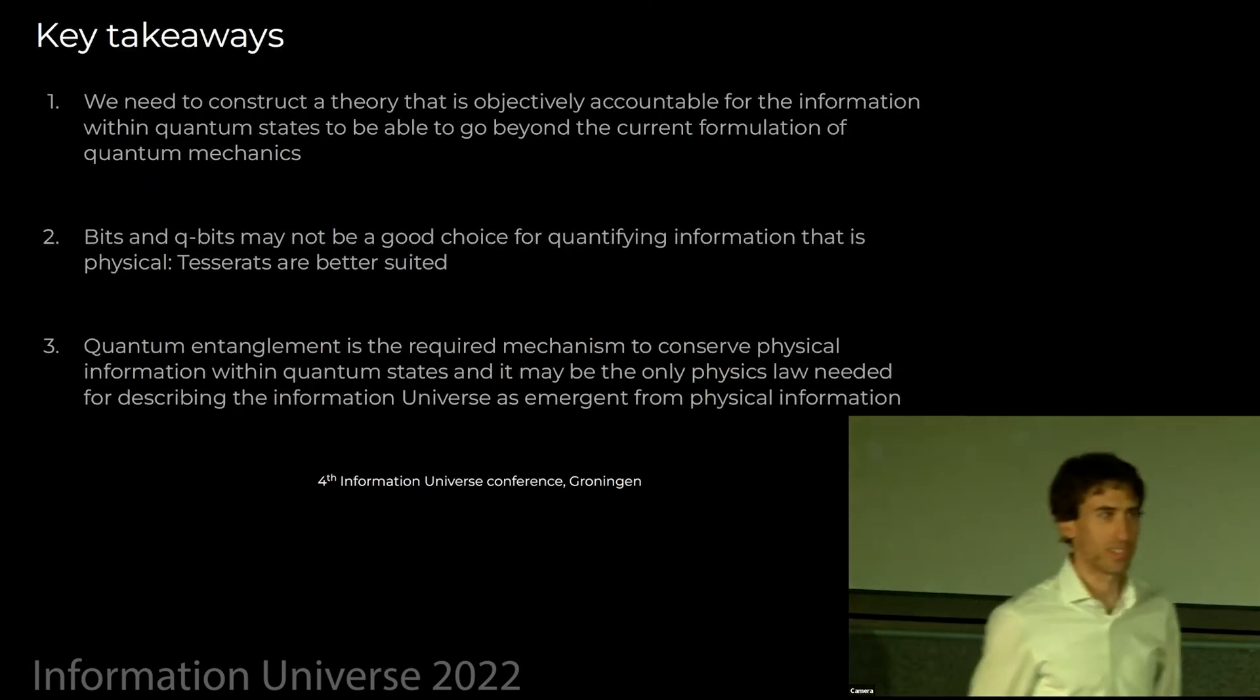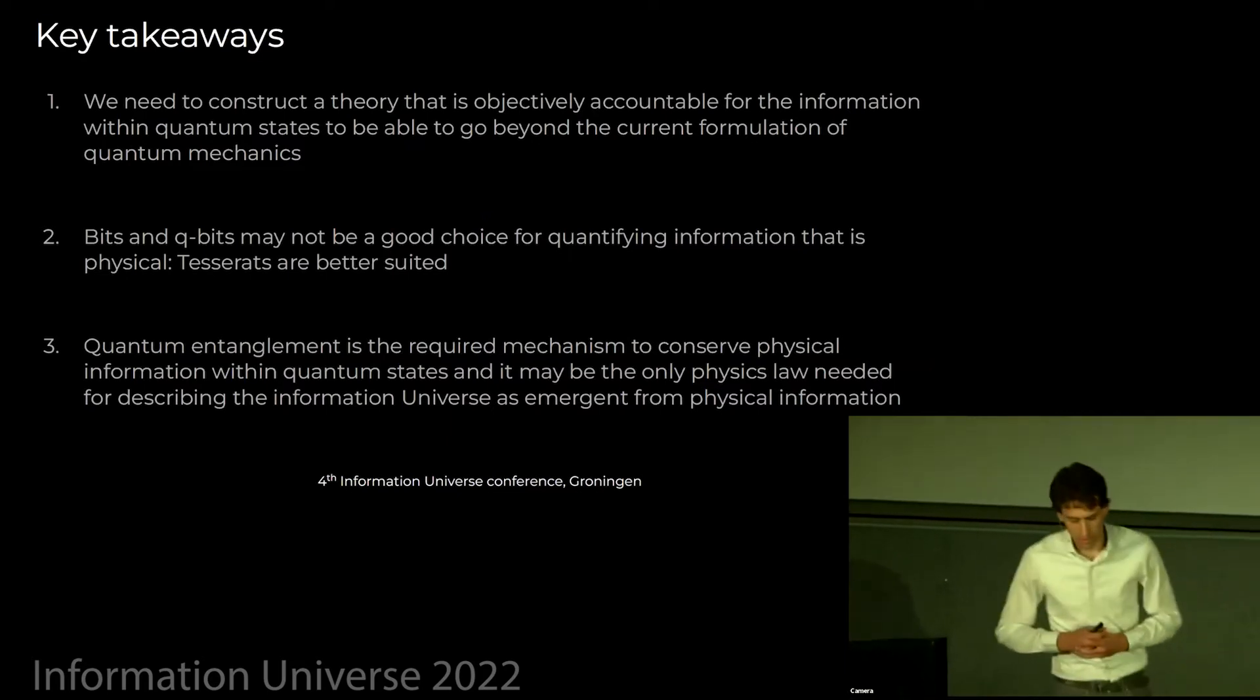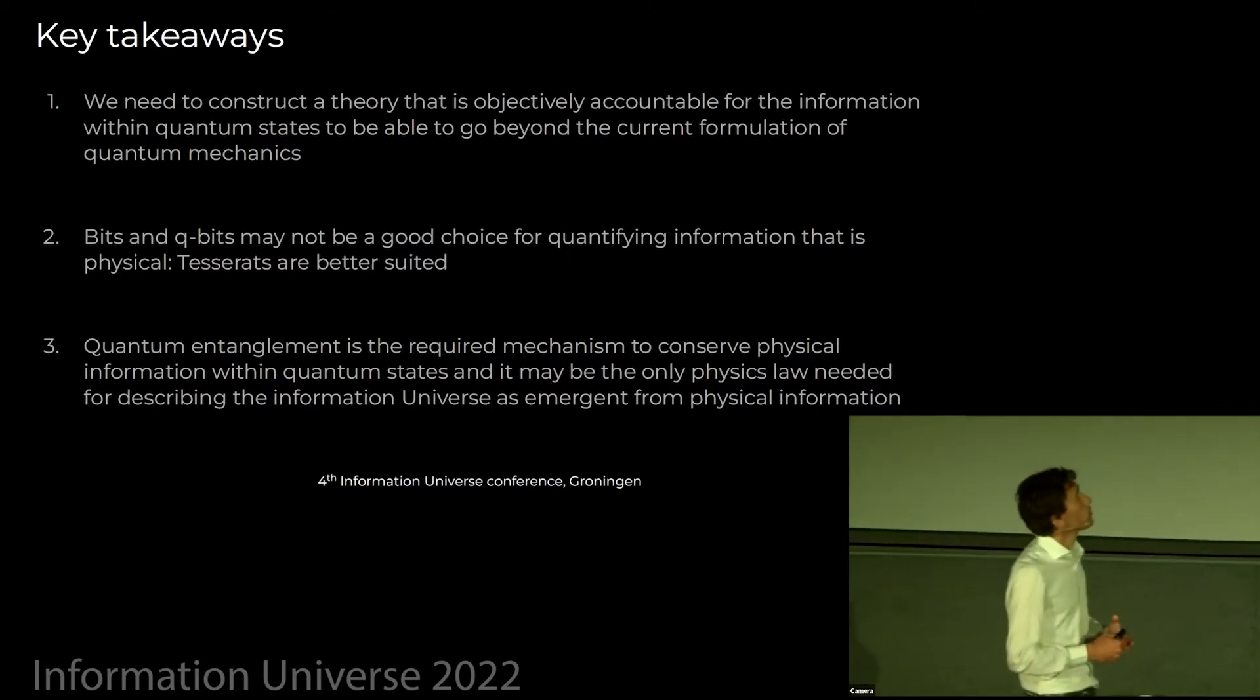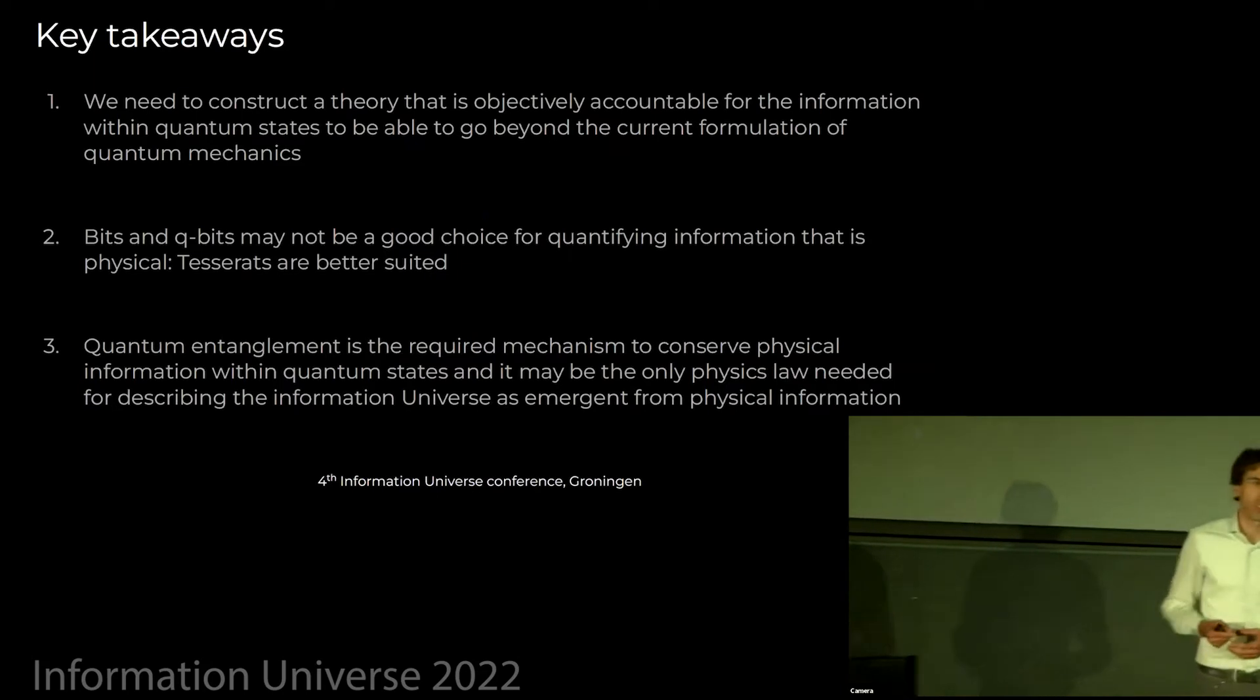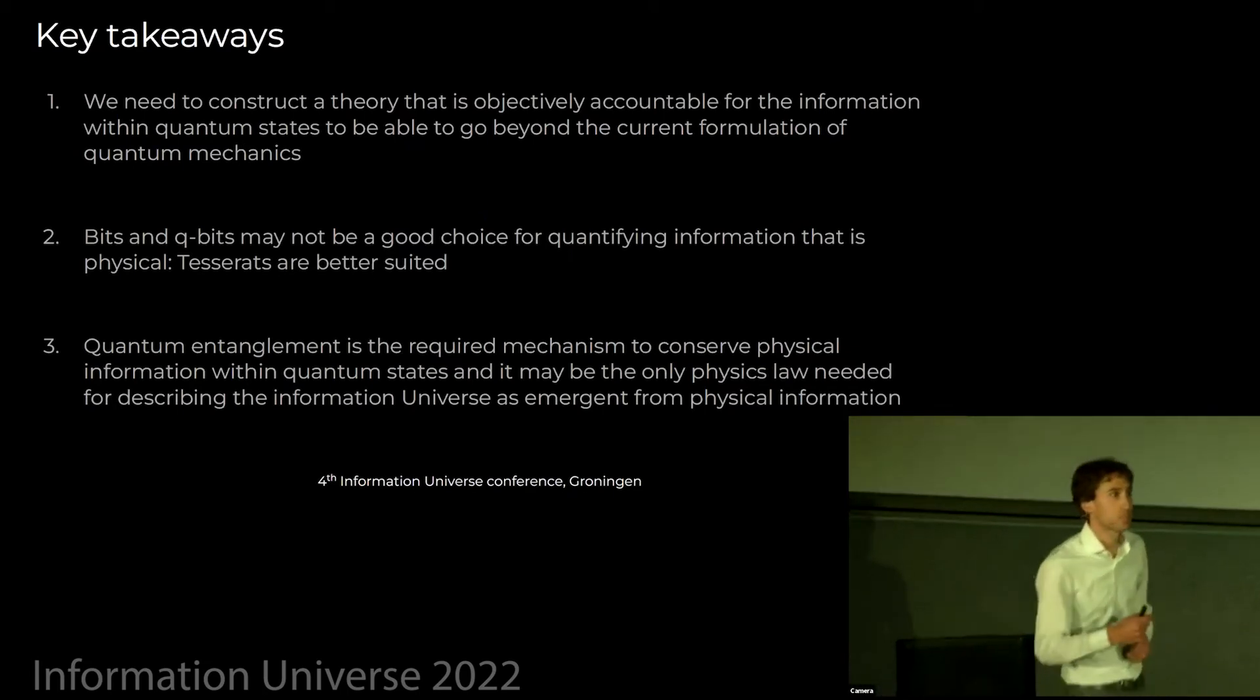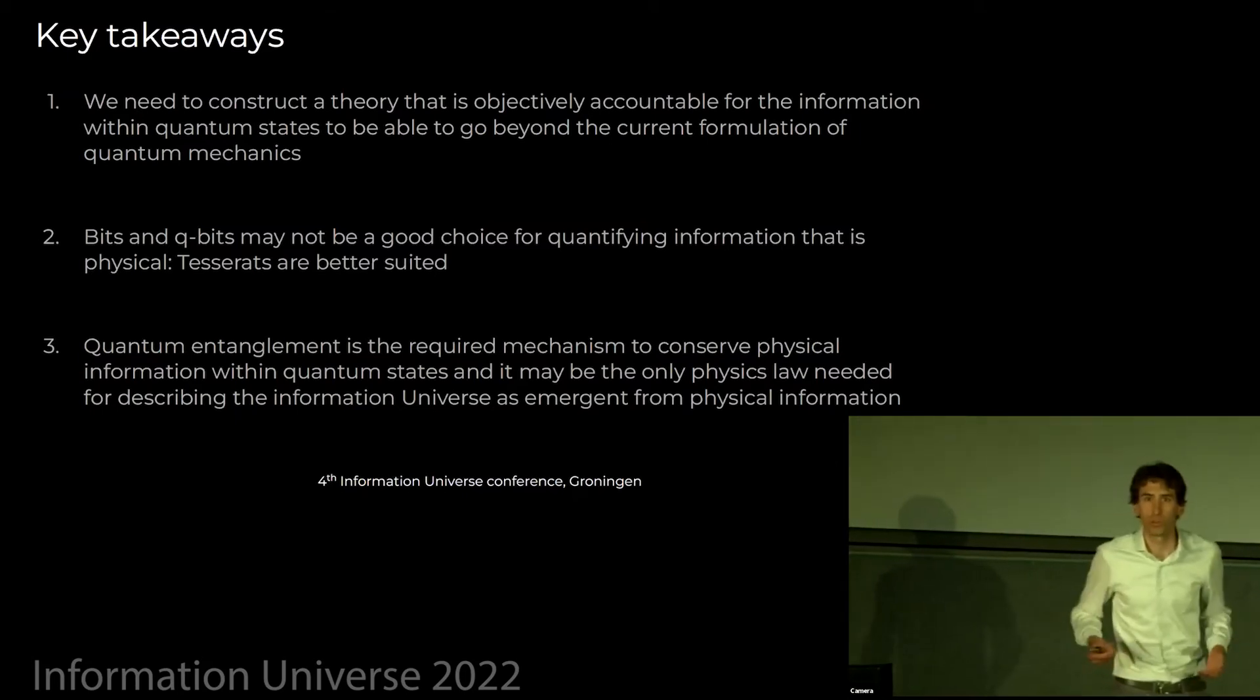Here I start already with my key takeaways. First of all, if we want to go beyond the current understanding in quantum mechanics and try to go a level deeper to really understand how physics can emerge from physical information, we should start to account much better of the type, the kind of information we put inside wave functions. Put aside epistemic wave functions that are subjective knowledge of the physical system, but try to think in terms of ontological wave functions. Wave functions that must contain all the information that the information universe needs to compute reality.